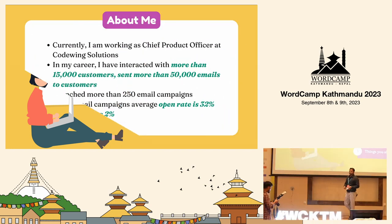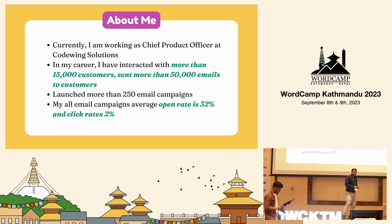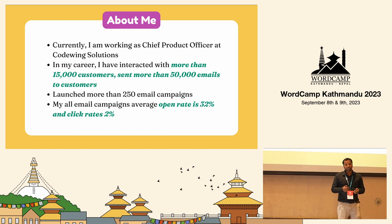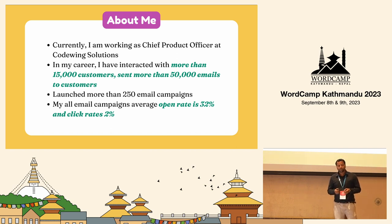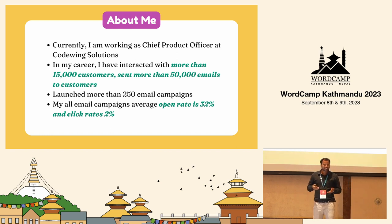Before we dive into the topic, here are a few things about me. Currently, I'm working as a Chief Product Officer at CodeWing Solutions. In my career, over five years, I have interacted with more than 15,000 customers and probably sent more than 50,000 emails. I have successfully run more than 250 plus email campaigns, and my average campaign statistics include more than 32% open rate and more than 2% click rate.